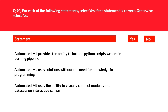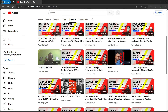This question is about Automated ML. Statement 1 says Automated ML provides the ability to include Python scripts written in a training pipeline. In Automated ML you cannot insert Python scripts or code, so the answer is no. Statement 2 says Automated ML uses solutions without the need for programming knowledge — this is true, so the answer is yes. Statement 3 says Automated ML uses the ability to visually connect modules and datasets on an interactive canvas. In Automated ML you can select data but not modules, and no canvas is used — so the answer is no. We log this as the correct answer.